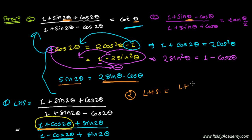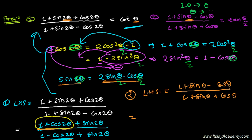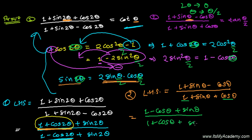The left-hand side of question 2 is: (1 + sinθ − cosθ) divided by (1 + sinθ + cosθ). I'll bring the cosine term together because for 1 + sinθ we don't have a direct formula. We imagine the angle as θ, so the half-angle will be θ/2. Rearranging: (1 − cosθ) + sinθ in the numerator, and (1 + cosθ) + sinθ in the denominator.